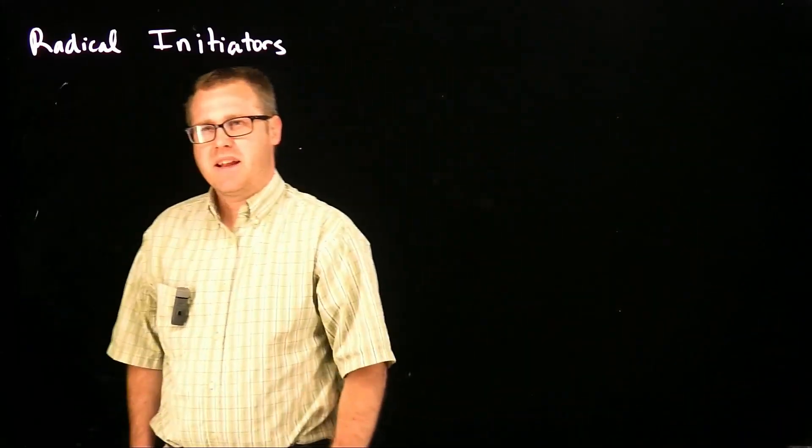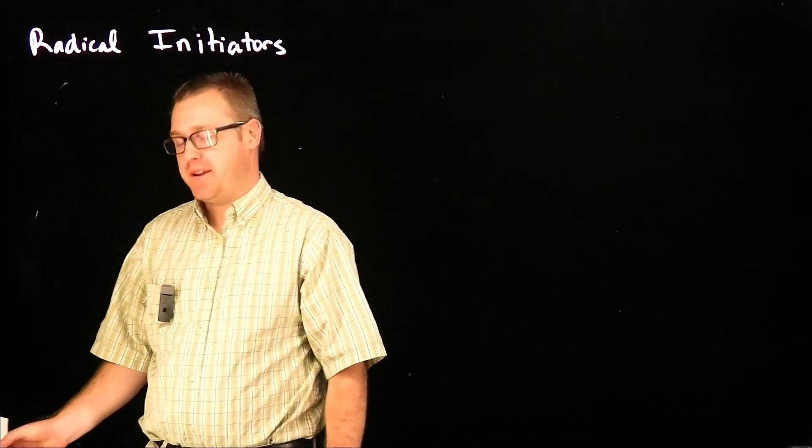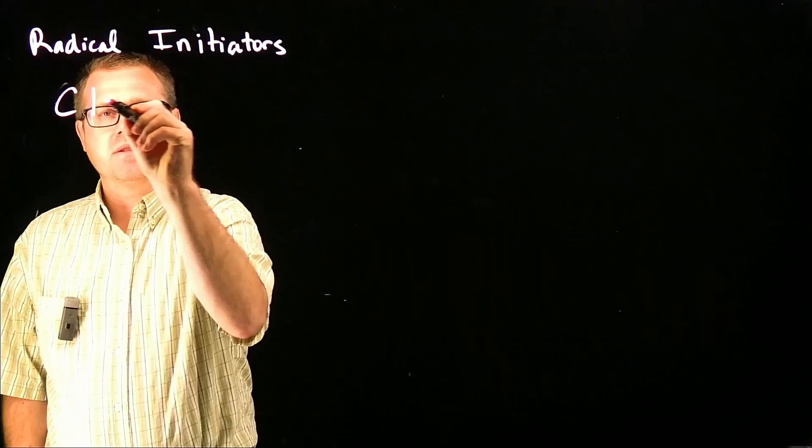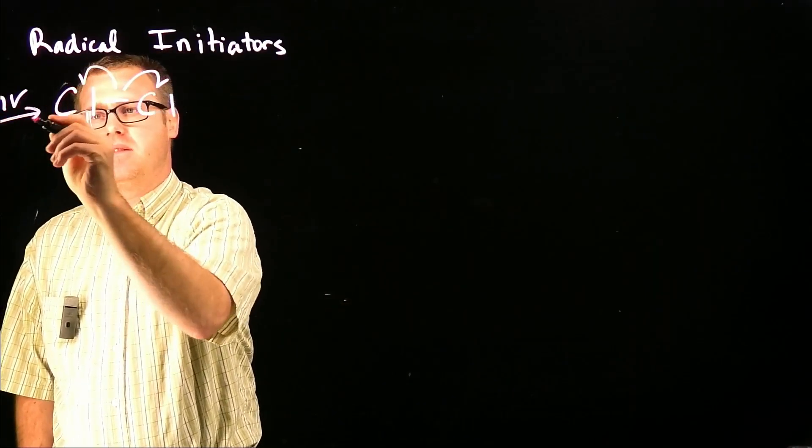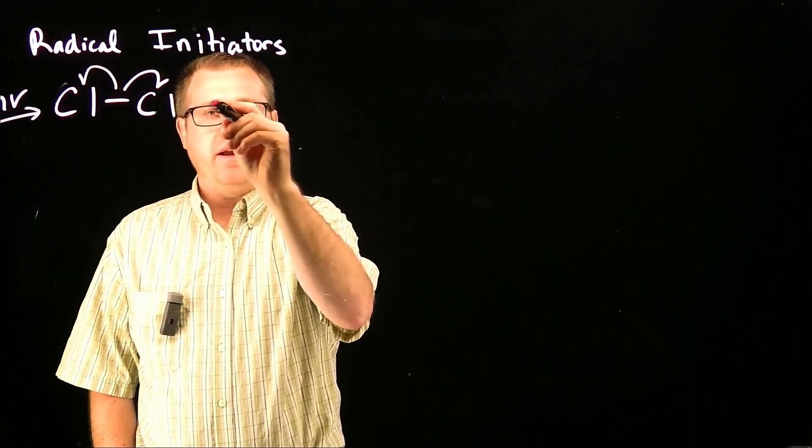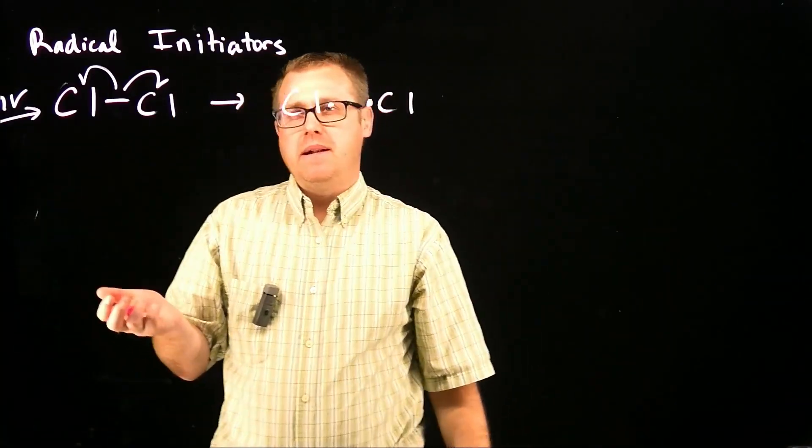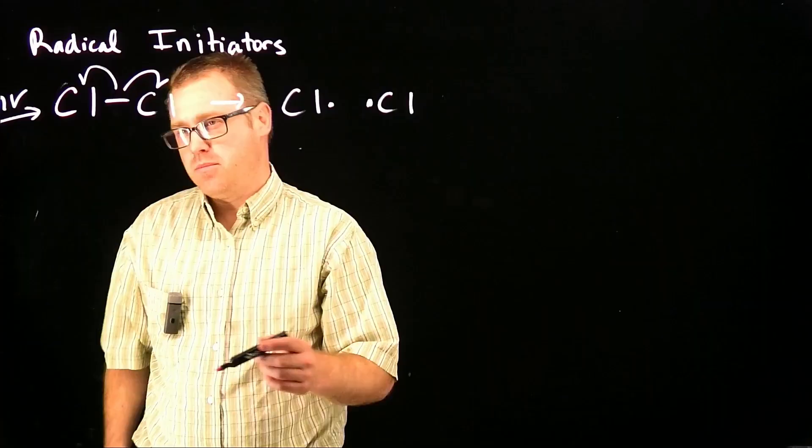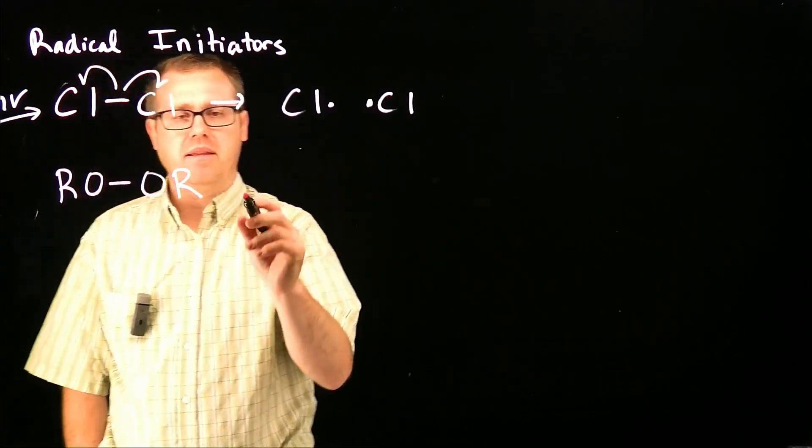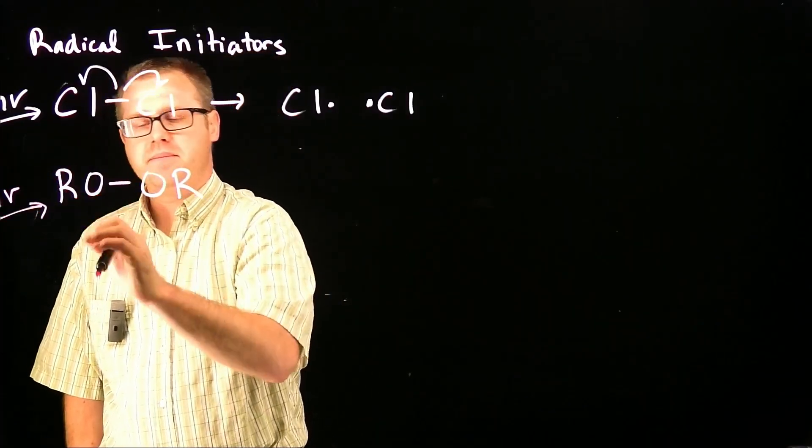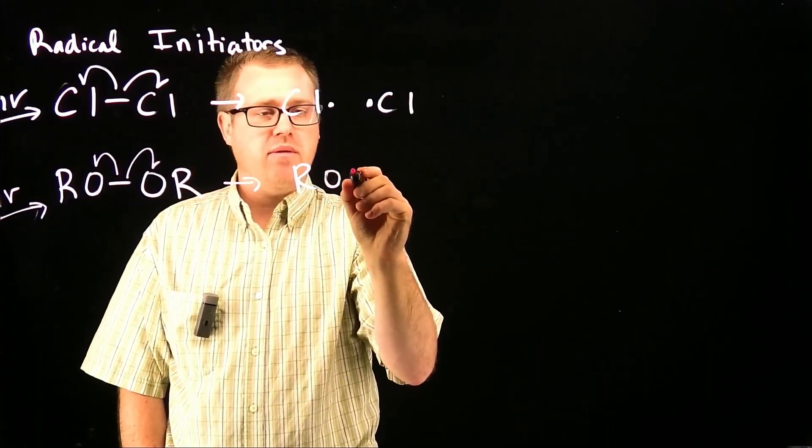Now let's take a look at radical initiators. Radical initiators are going to initiate the radical reaction. What we've seen so far is when we take a look at chlorine. If we shine some light on it, we're going to get a radical process going. And then we would get our two radicals like we've seen already.